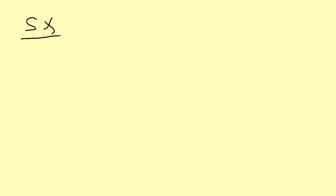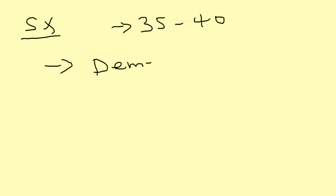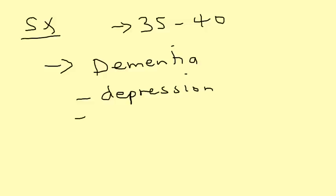Now let's get into the symptoms of Huntington's. The age of onset is about 35 to 40, so quite young. The predominant symptoms include neurologic symptoms like dementia. A person can also suffer from depression, can become very apathetic — just doesn't have any energy — and irritability.